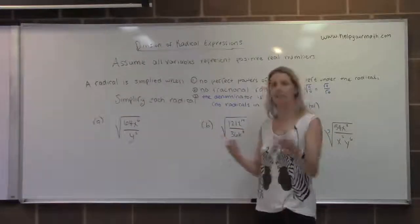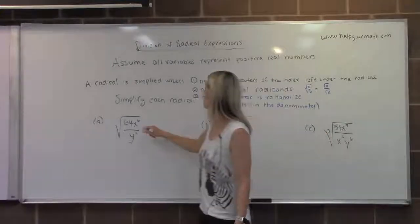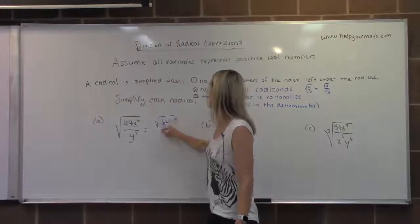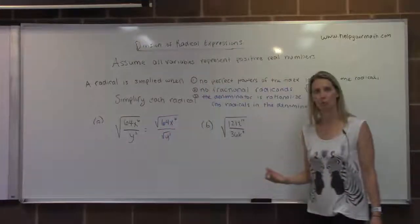In this case, we can't simplify the numerator with the denominator; they don't have any common factors. So what I would probably do is write this as two separate radicals: 64x to the sixth over the square root of y squared, and then just simplify each one separately.